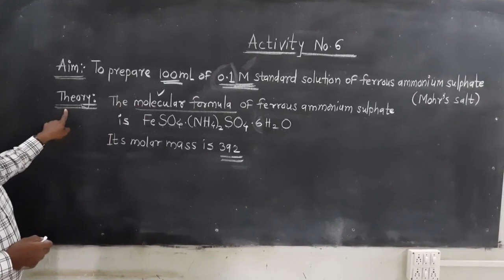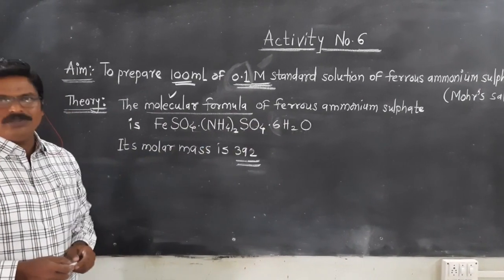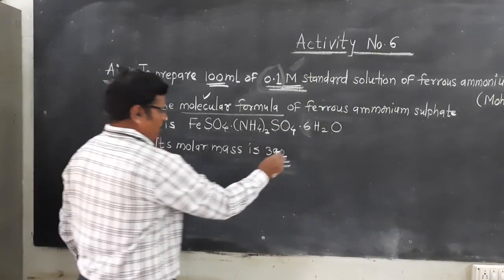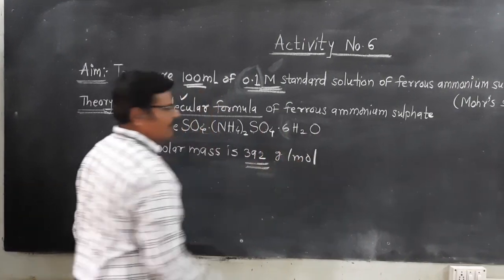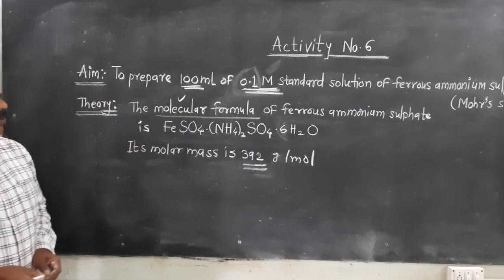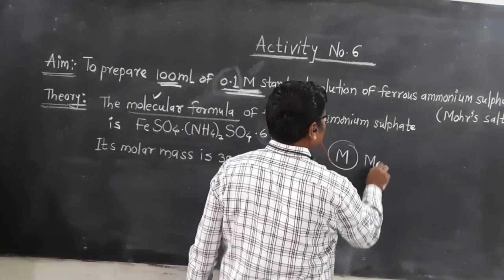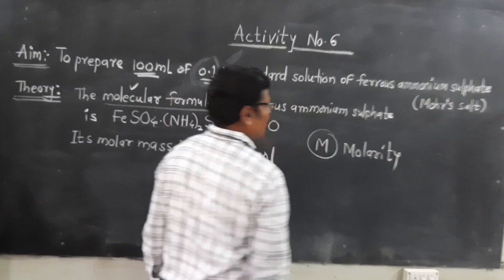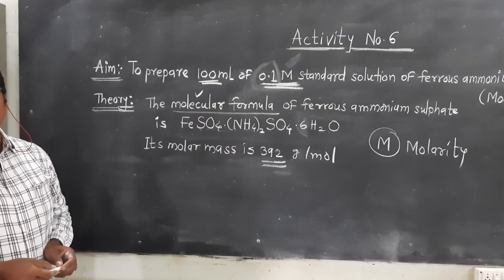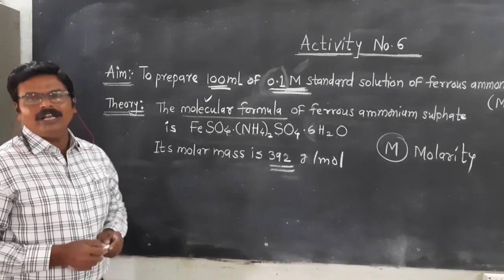Theory for this experiment: the molecular formula of ferrous ammonium sulfate is FeSO₄·(NH₄)₂SO₄·6H₂O, and its molecular mass is 392 gram per mole. The capital M in 0.1 molar standard solution stands for molarity, which is the amount of substance dissolved in a definite volume of solvent, or moles of solute present in 1 litre of solvent.